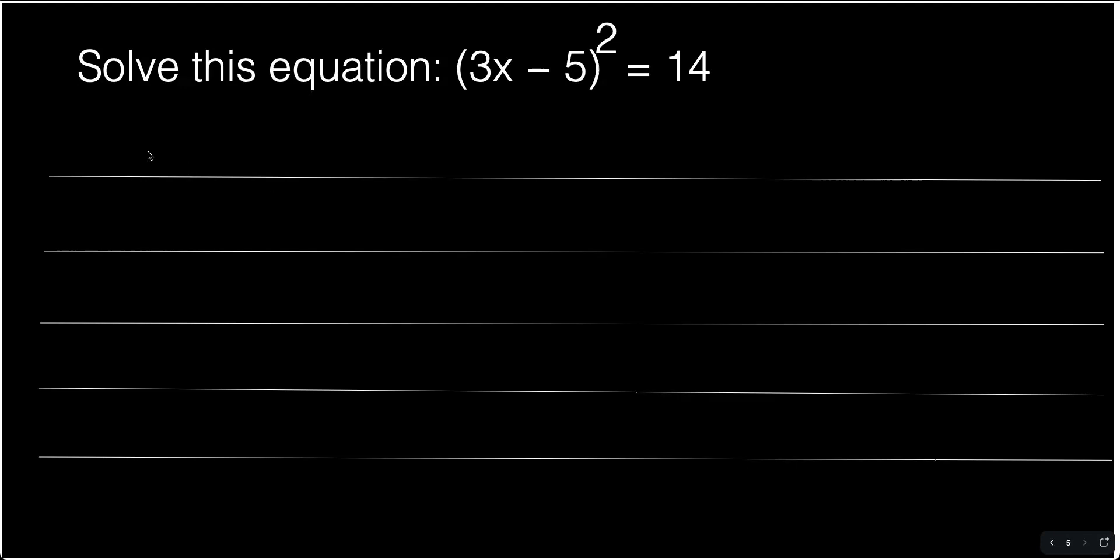To be able to do this, I'm just going to rewrite this here again: 3x minus 5 squared equals 14.